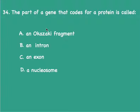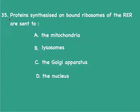The part of a gene that codes for a protein is the expressed portion, or the exon, and several parts of genes do not code for proteins — they are referred to as introns. Proteins synthesized on bound ribosomes of the rough endoplasmic reticulum are sent to the Golgi apparatus, as these are the proteins exported from the cell, whereas those synthesized on free ribosomes are kept for use within the cell.